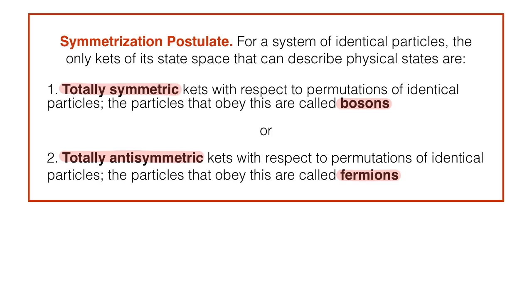Remember that for n distinguishable particles, the state space V is the tensor product space of single particle state spaces V1, V2, all the way to Vn. What the symmetrization postulate tells us is that for a system of n identical particles, the combined state space is no longer V. Instead, it is one of two subspaces of V: either V_plus, spanned by the totally symmetric states, or V_minus, spanned by the totally antisymmetric states.